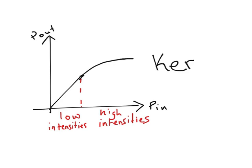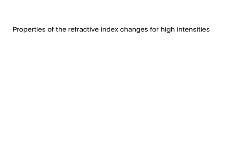But why does this happen? This happens because the properties of the refractive index change for higher intensities, where the refractive index n is equal to the speed of light in air divided by the speed of light in the medium, which in this case is the fibre optic.